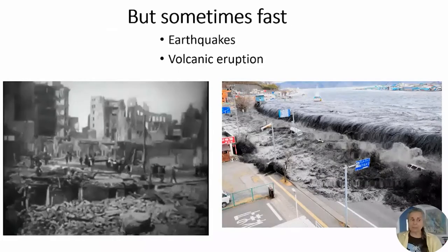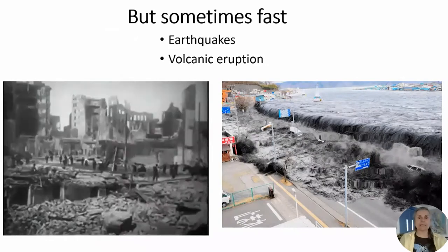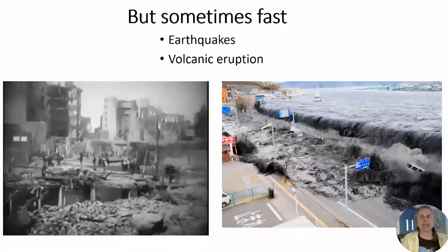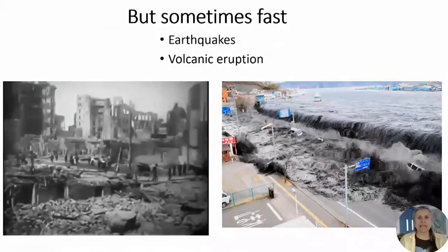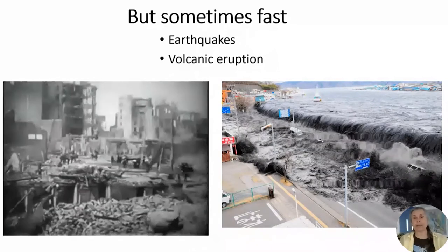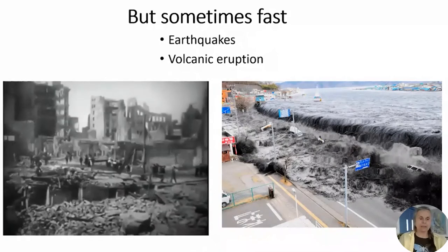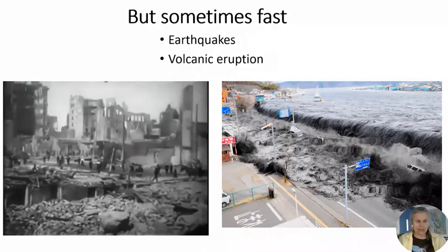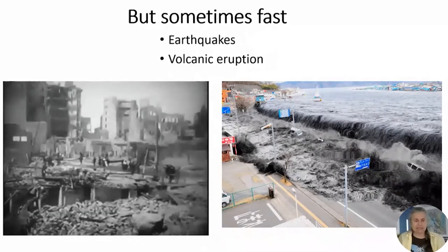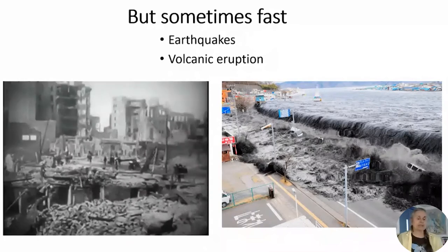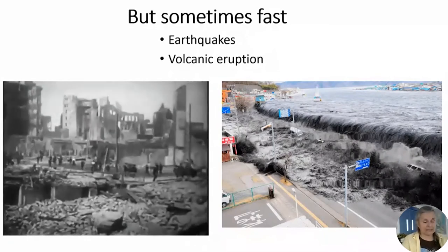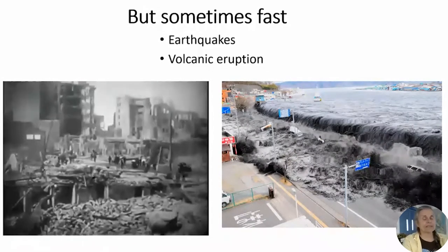Sometimes plate tectonics is fast. That's a picture from the 1906 earthquake — all those buildings collapsed, probably within a minute, as things became unstable. Gravity pulled everything down. Just a week ago we felt an earthquake from quite far away. Look to the right — that's an animated gif of a tsunami. An earthquake occurring in water can create big energy waves, and as you can see, this water is coming into the land. Plate tectonics can have some quick events, but those are rare — and sometimes you don't want to be near those.